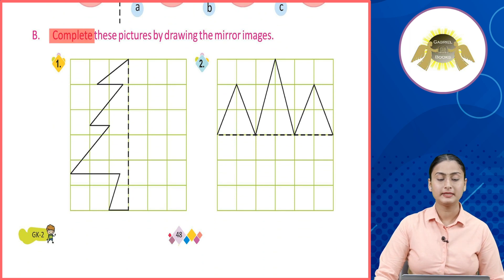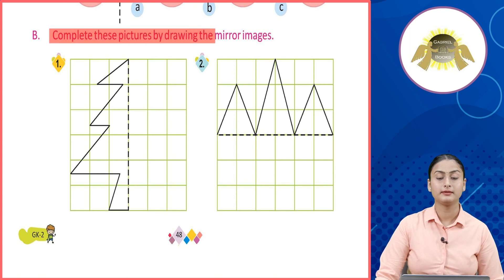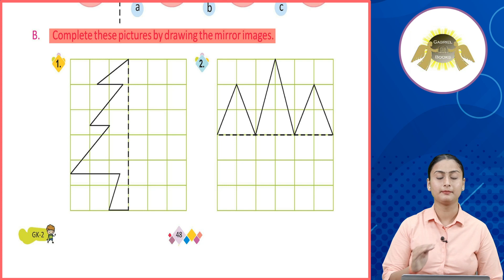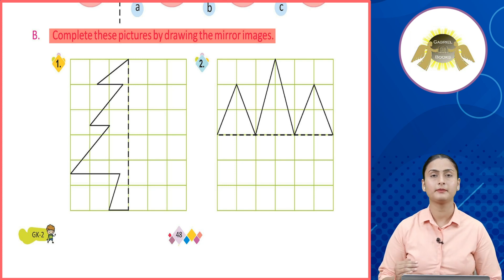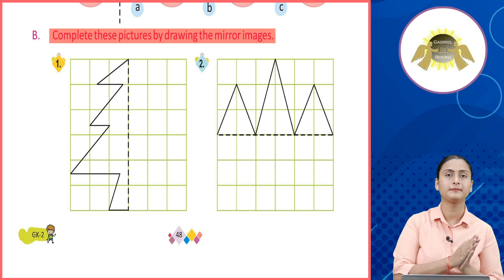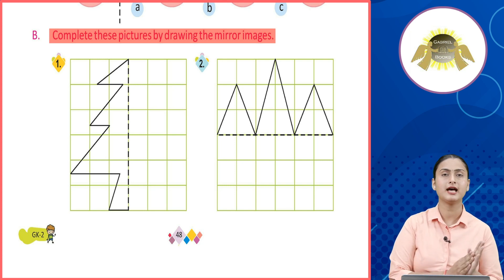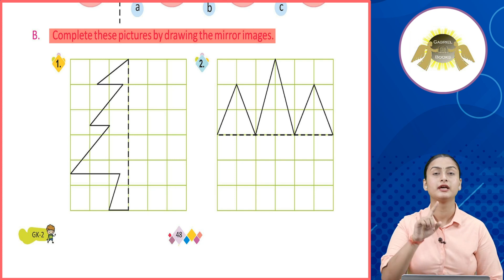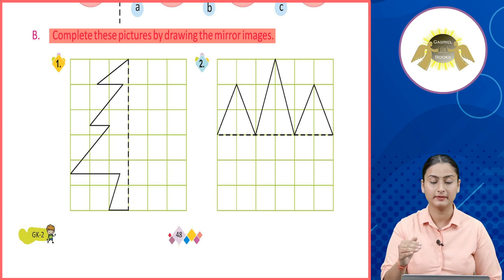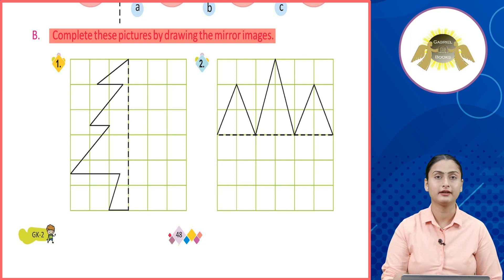B. Complete these pictures by drawing the mirror images. Toh aapke saamne first aur second number pe, left hand side pe ek image dhe rakhye. Aapko uski bilkul mirror image right hand side pe, ya fir niche ki taraf draw karni hai.